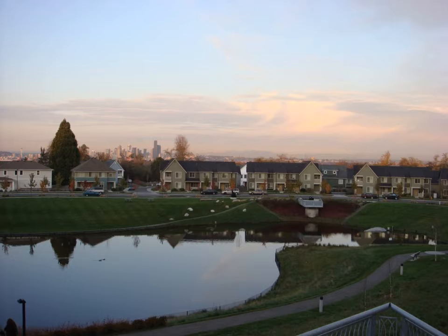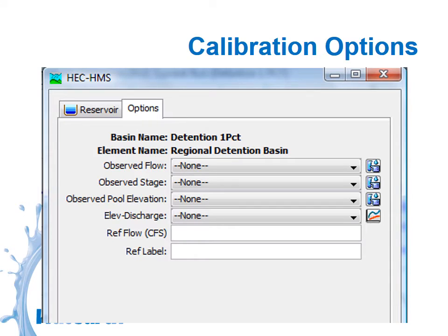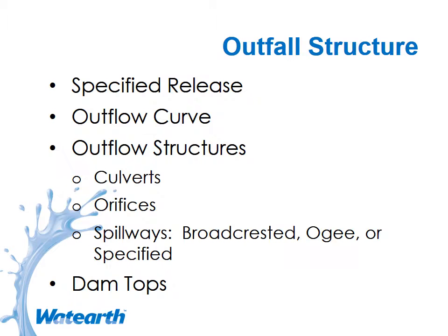We can model dry detention basins, perhaps with a recreational component, and we can model wet detention basins. One thing to be careful with on a wet detention basin is setting the starting water surface elevation not at the very bottom of the basin but at the static water surface. There are also calibration options that can be used within the model specific to a reservoir if you have gauge data.